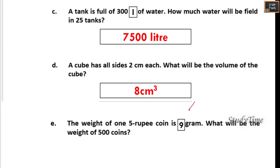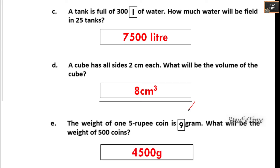The weight of one five-rupee coin is 9 grams. What will be the weight of 500 coins? The answer is 4500 grams.